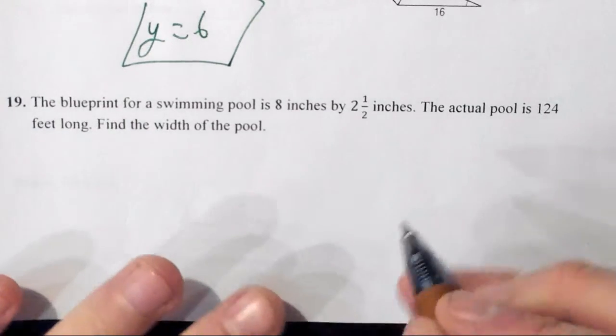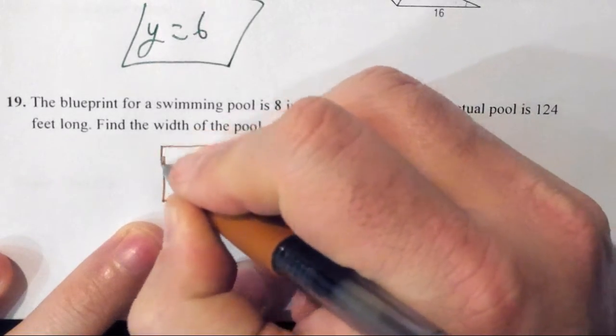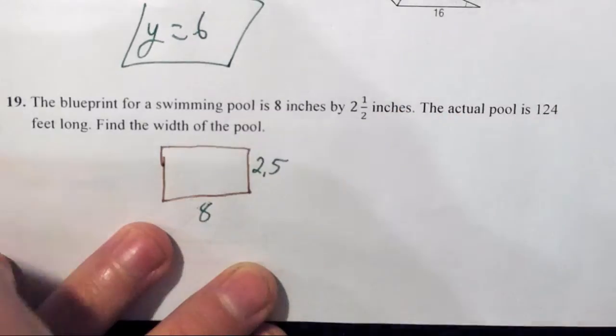Number 19: The blueprint of a swimming pool is 8 by 2½ inches. We're going to assume that is a rectangle, so it's 8 by 2½ inches.